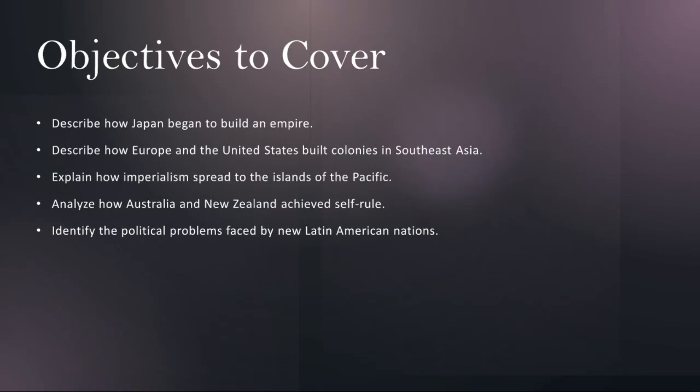Next, we'll be describing how Europe and the US built colonies in Southeast Asia. The colonization of Southeast Asia by European powers and the US represents a pivotal chapter in global history. We'll examine the motivations behind Western imperialism in the region, including economic exploitation, geopolitical competition, and the spread of Western cultural and religious values.